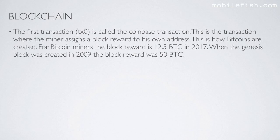The Coinbase transaction is where the miner assigns a block reward to his own address. This is how Bitcoins are created. For Bitcoin miners, the block reward is 12.5 Bitcoin in 2017. When the Genesis block was created in 2009, the block reward was 50 Bitcoins.